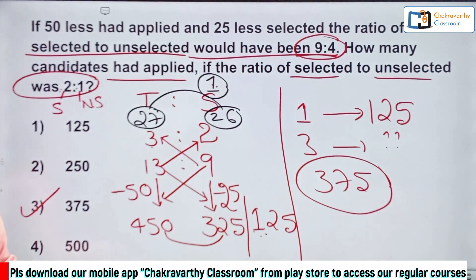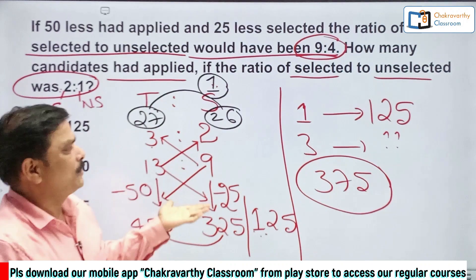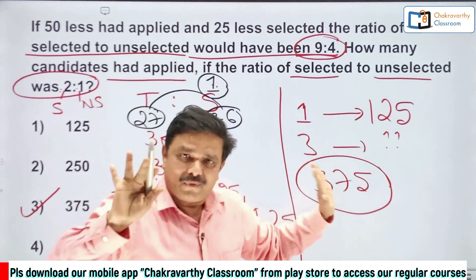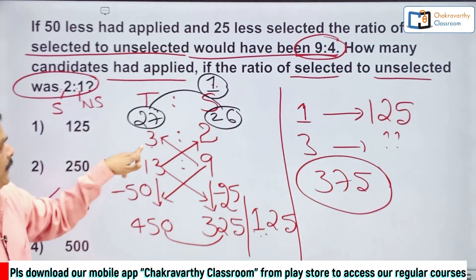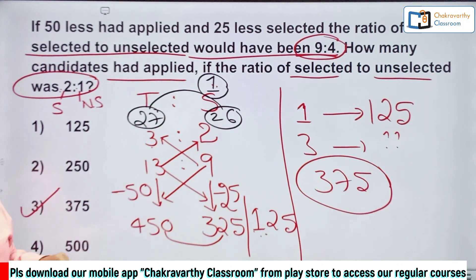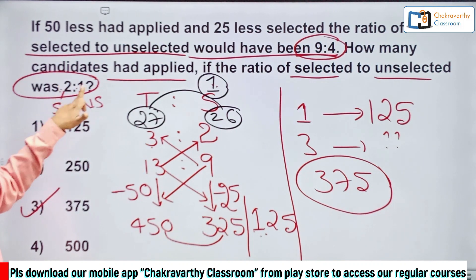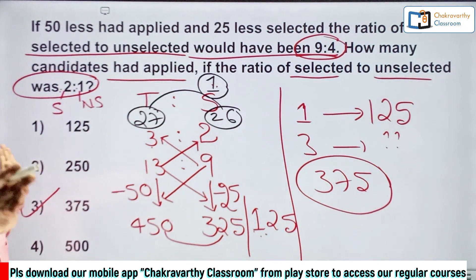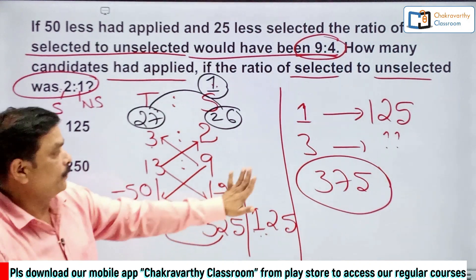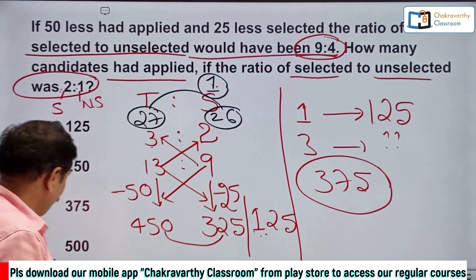If you want to go with algebra, take the total as 3x — so selected is 2x and unselected is x — then simplify. But why waste the time? The shortcut is clearly more efficient for an examination setting.